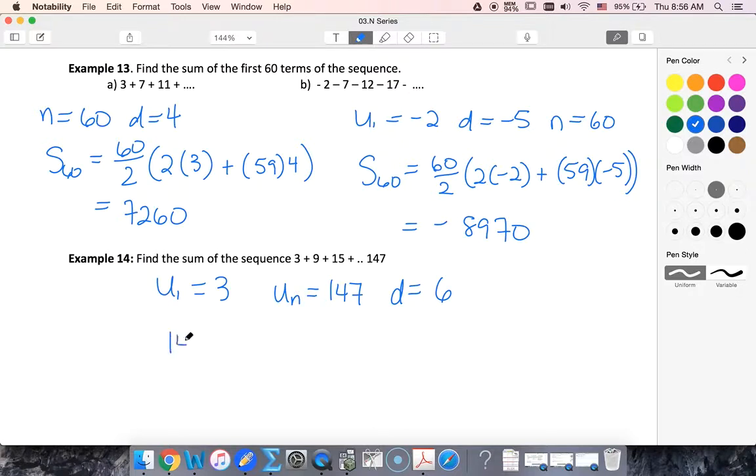So I know that u sub n is equal to u1 plus n minus 1 times d. So move this over, I'll get 144 divided by 6 is going to be 24. And that's my n minus 1. So n is 25.